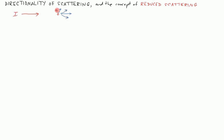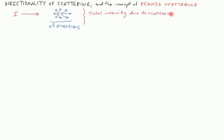I'll draw a distribution here that's somewhat forward-directed, as you've seen in previous videos. There is scattering in all directions — when we talk about scattering by a particle, we're talking about photons going off in all directions. The total intensity lost by this beam due to scattering over a distance dx is given by its initial intensity I times mu_s dx. We've already covered that before.